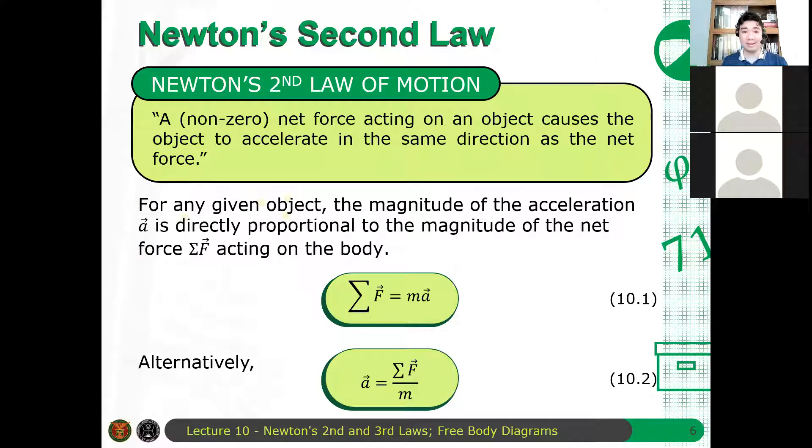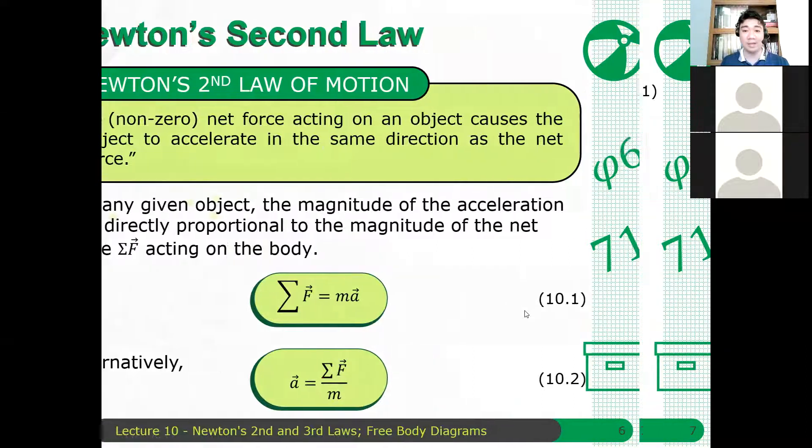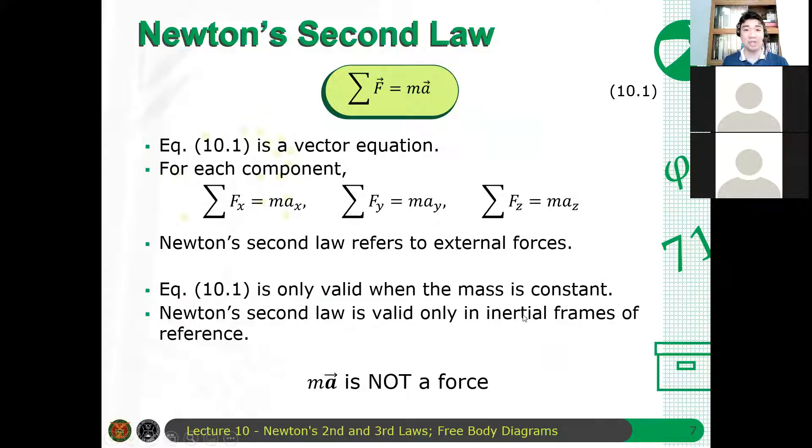And then we also recall Newton's second law. For Newton's second law, if there is a net external force acting on the system, it will give rise to acceleration. This will be the coverage for Tuesday's discussion, which is on dynamics of particles. Alternatively, we have the acceleration is just the net sum of net external forces all over mass. Again, this is a vector equation. Therefore, it's also true for the x, y, and possibly z components of the motion.